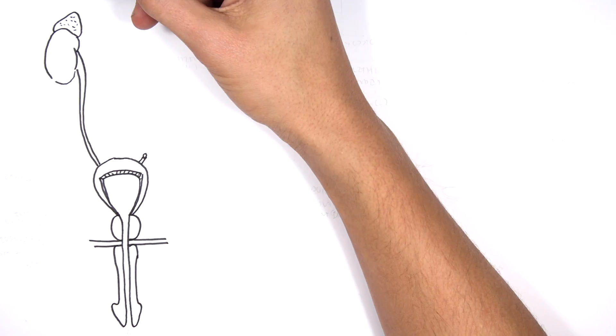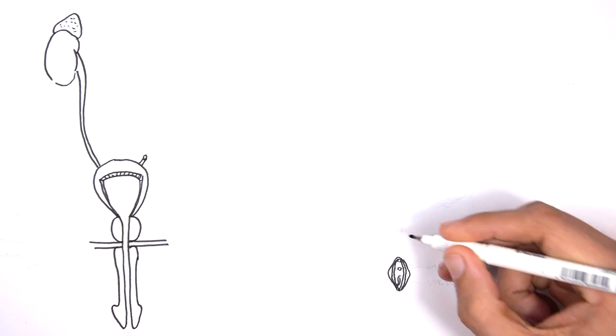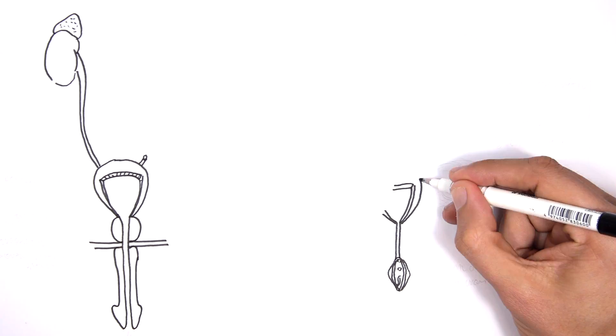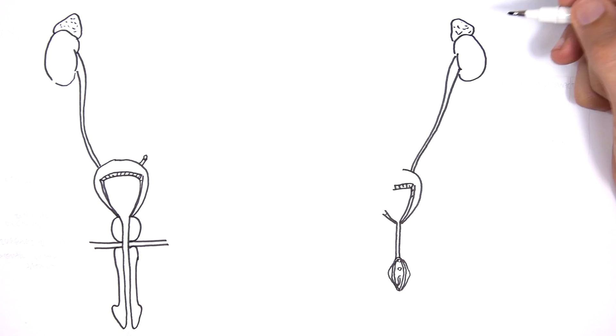Before we talk about some of the causes of hematuria, let us recap the urinary system between the male and the female and the anatomy.